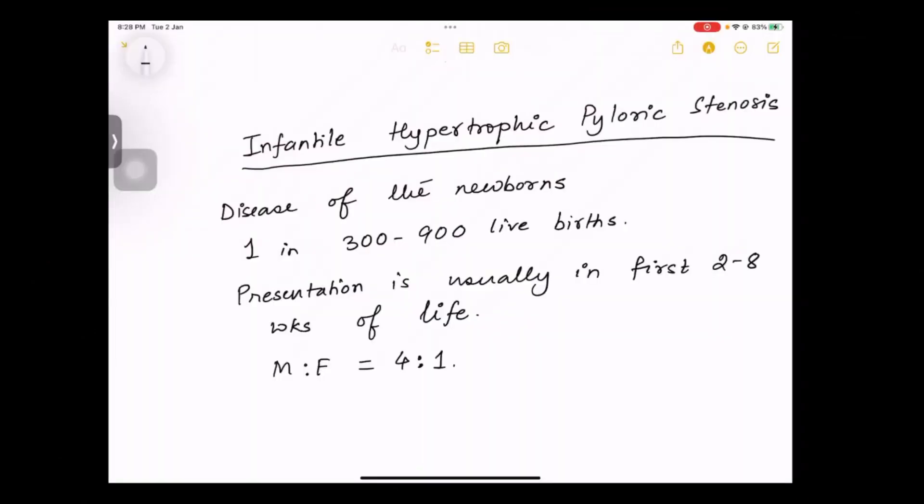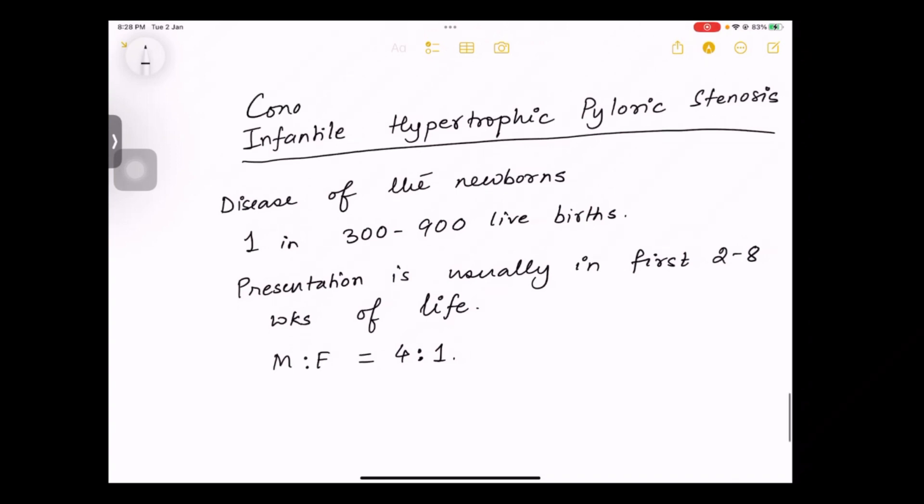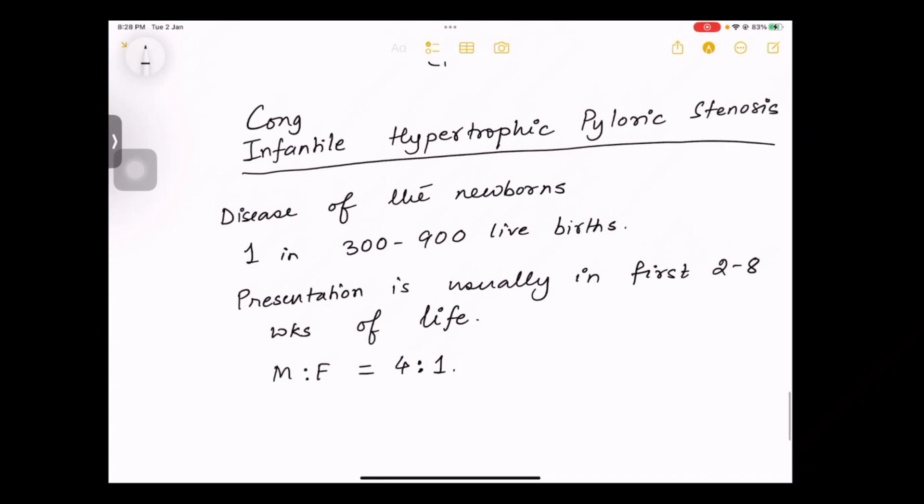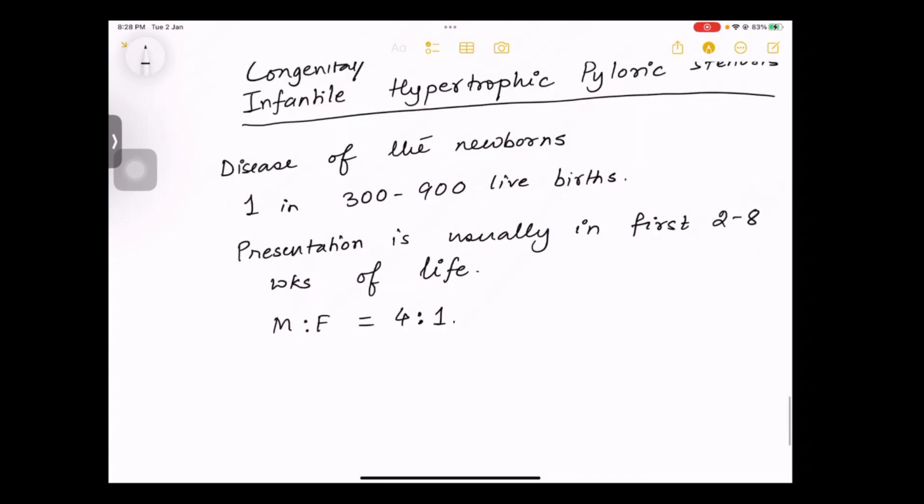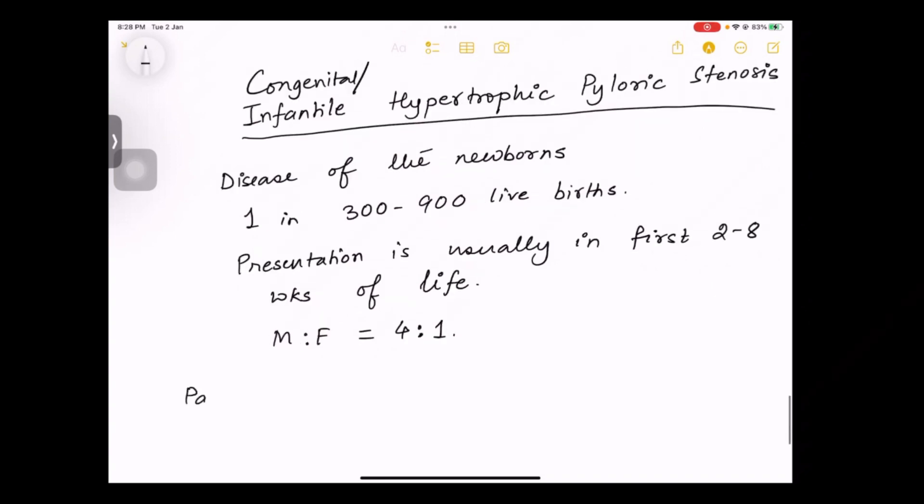Let us start with a definition. This is a clinical pathological condition in which newborns are affected, and one newborn in every 300 to 900 live births has this disease. Presentation is usually in the first two to eight weeks of life, and males are four times more affected than females, with an M:F ratio of 4:1.